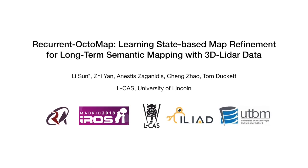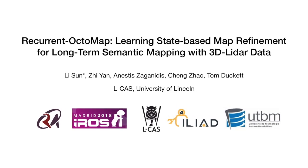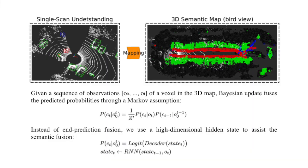Recurrent Octomap is a novel semantic mapping approach. The key problem of semantic mapping is how to fuse single-frame understanding into the global map.